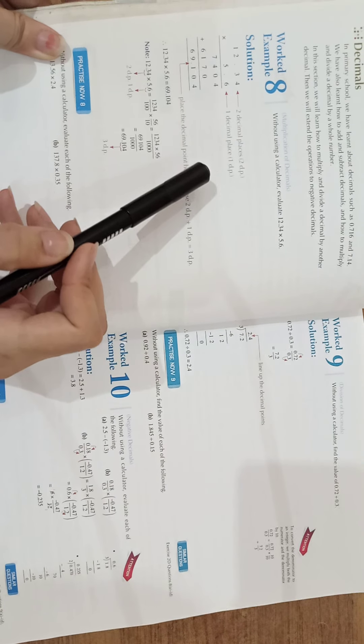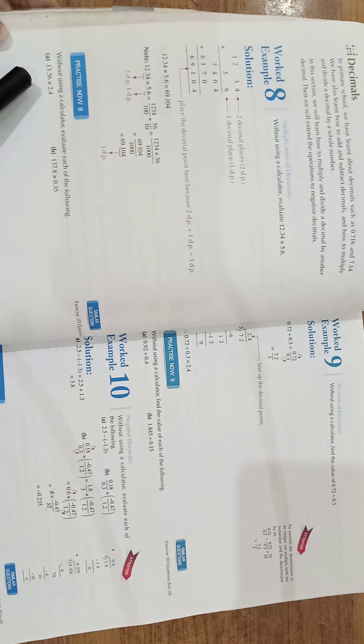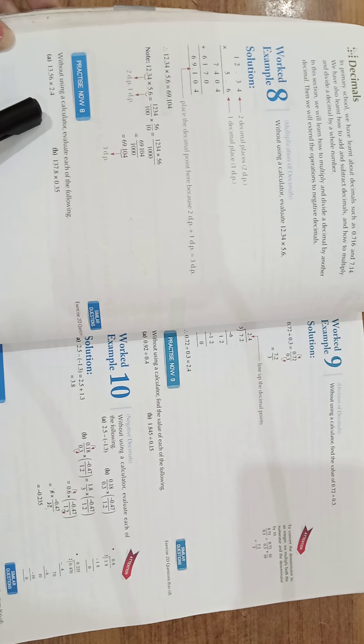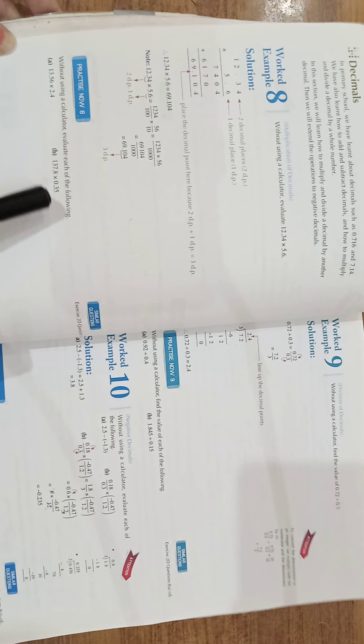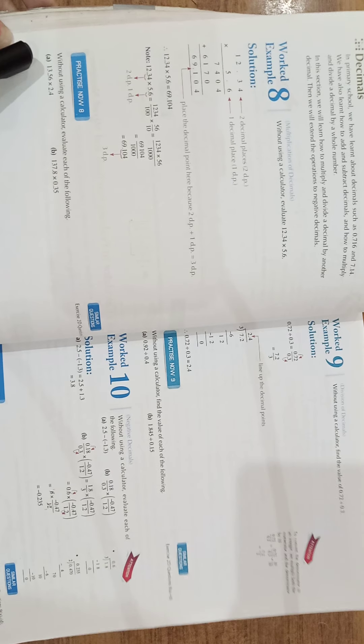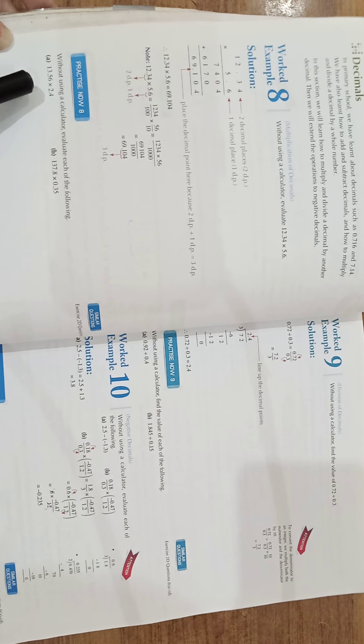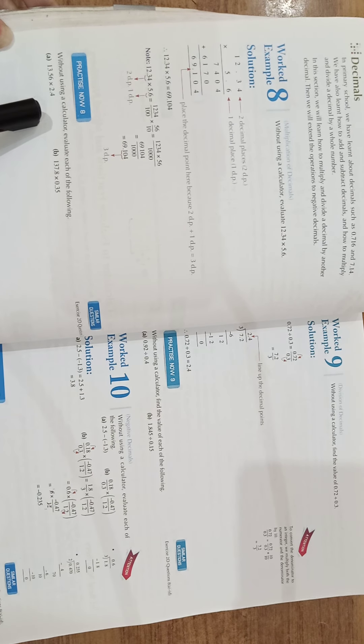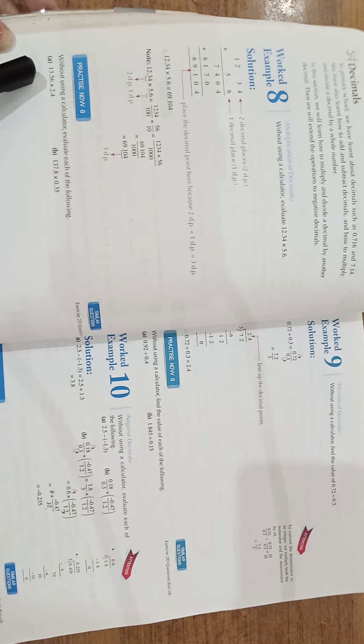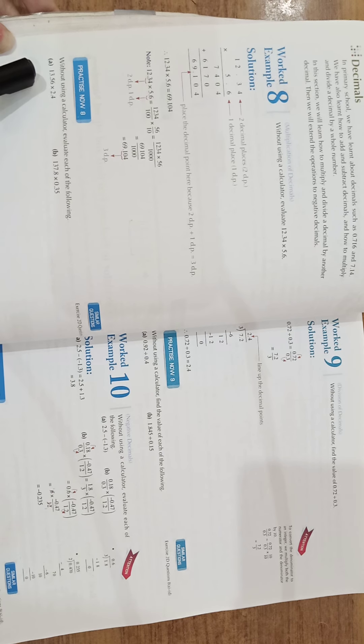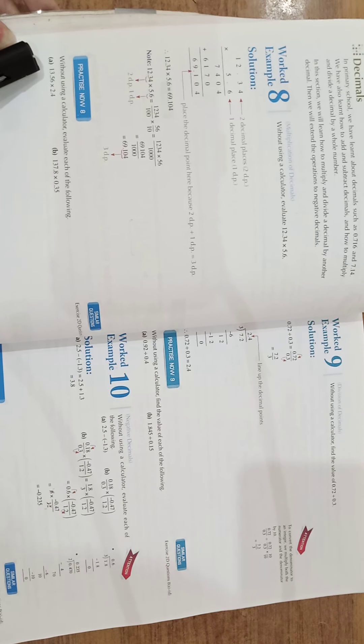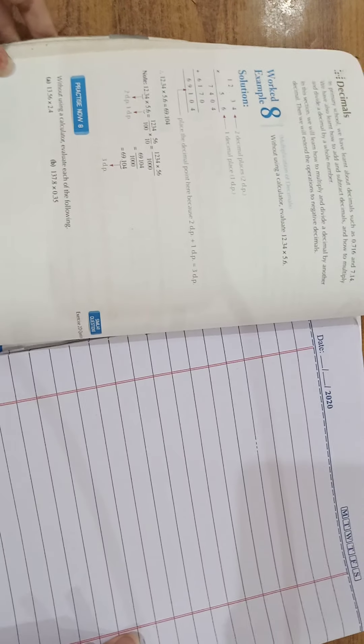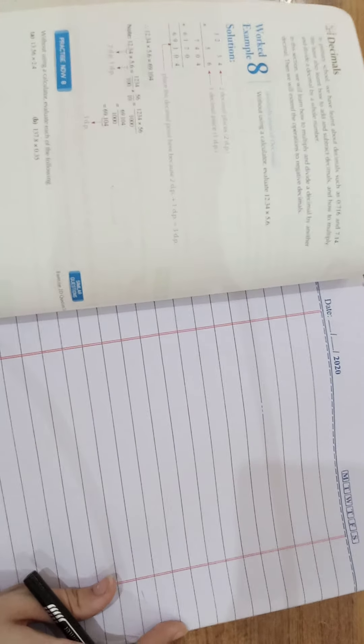So there are some questions. You can see that practice now 8, without using calculator, evaluate each of the columns. A part: 13.56 multiply by 2.4. We are going to multiply two values of decimals. Both are decimals because both are in point form.